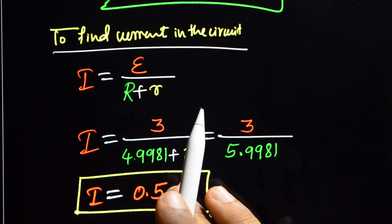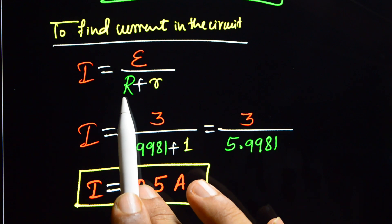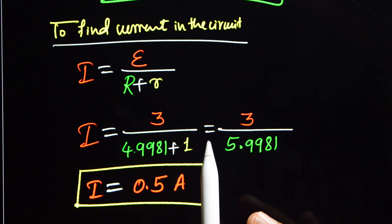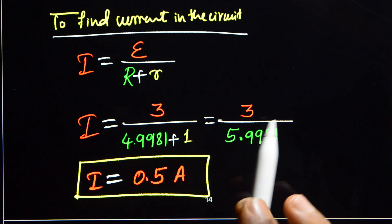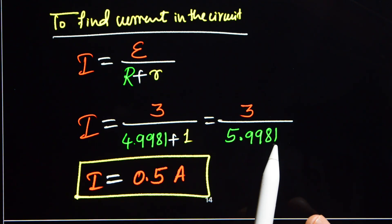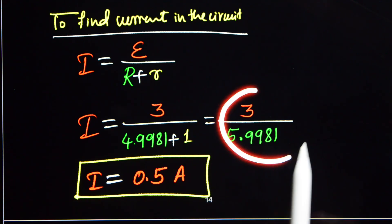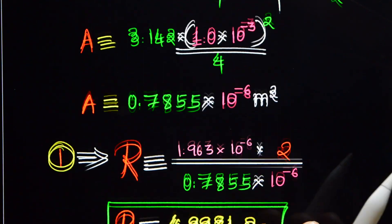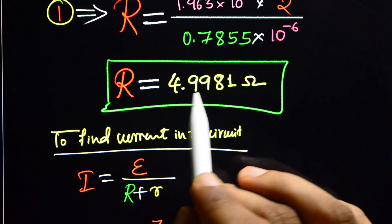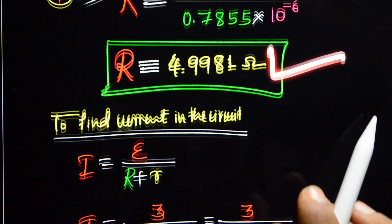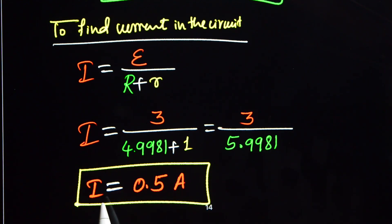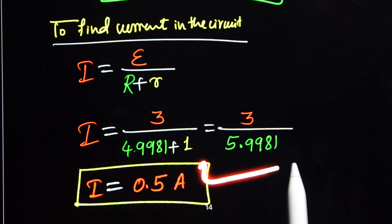Substituting: I is equal to 3 divided by 4.9981 plus 1, which equals 3 divided by 5.9981. On simplification, the current is 0.5 ampere. So the resistance of the wire is 4.9981 ohm and the current through the circuit is 0.5 ampere.